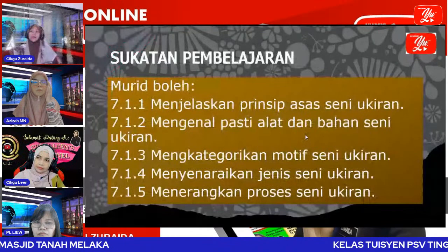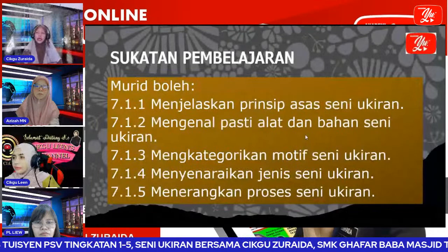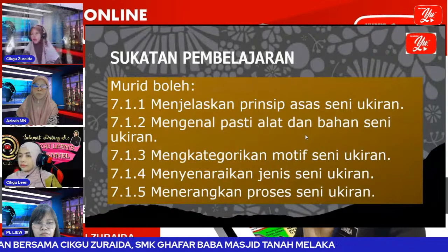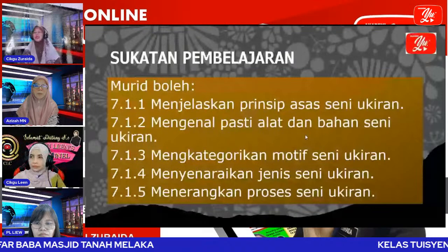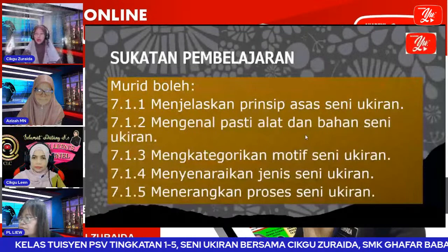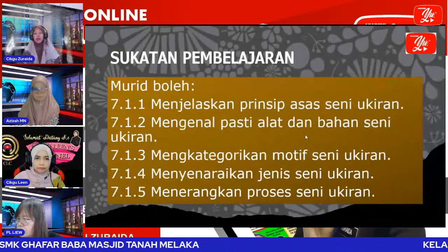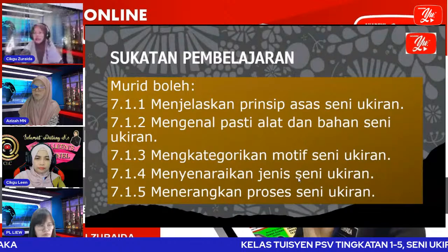Sukatan pembelajaran tajuk ni ada lima. Yang pertama, kamu kena jelaskan prinsip asas seni ukiran — ini dalam persepsi seni, 7.11, 7.12, 7.13, 7.14. Kemudian mengenal pasti alat dan bahan seni ukiran, kategorikan motif seni ukiran, senaraikan jenis seni ukiran, dan menerangkan proses seni ukiran — itu dalam eksplorasi seni.